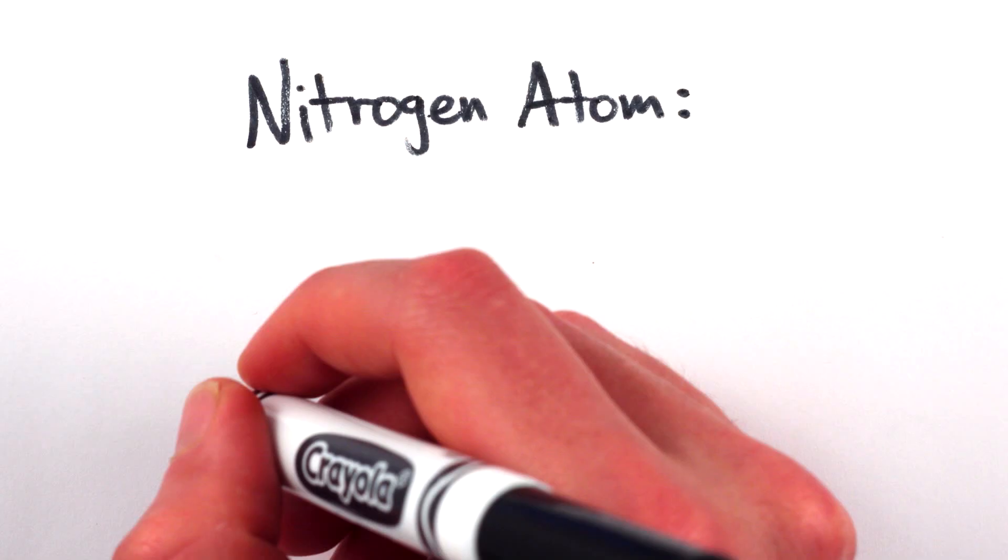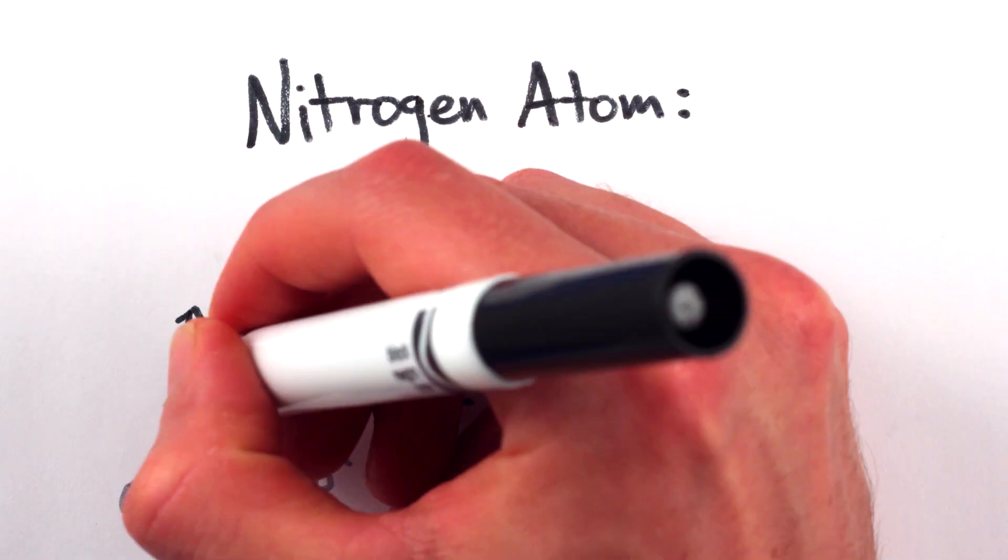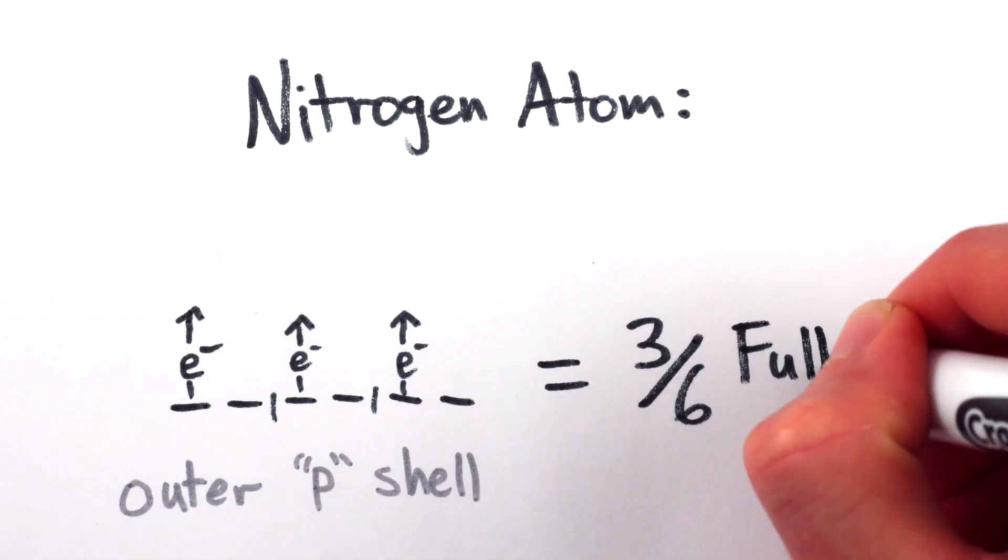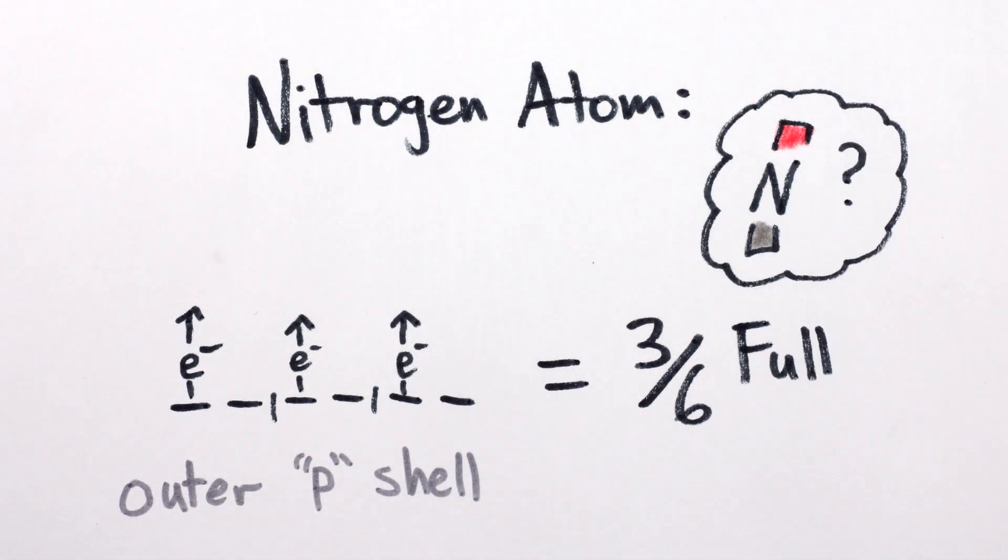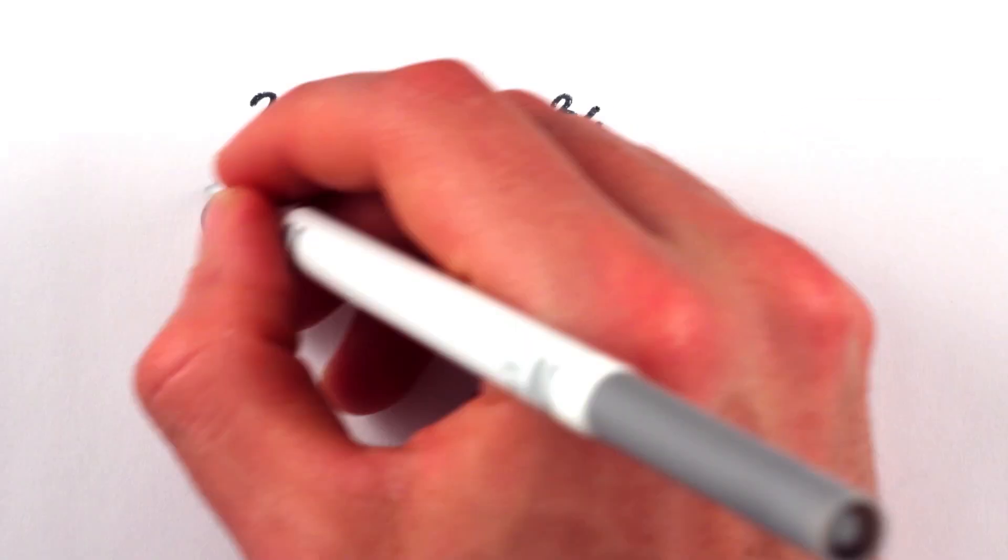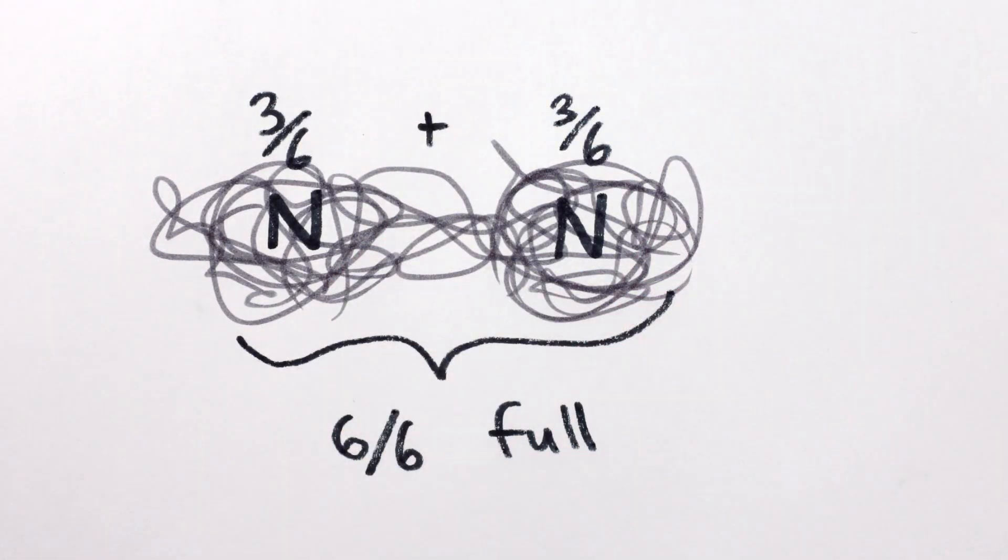There are also a lot of subtleties we've skated over, like the fact that nitrogen is diamagnetic even though as an atom it has unpaired electrons. One might think that it should, at the very least, be paramagnetic. But nitrogen atoms bond to form N2 molecules which have full outer electron shells, and are thus only diamagnetic.